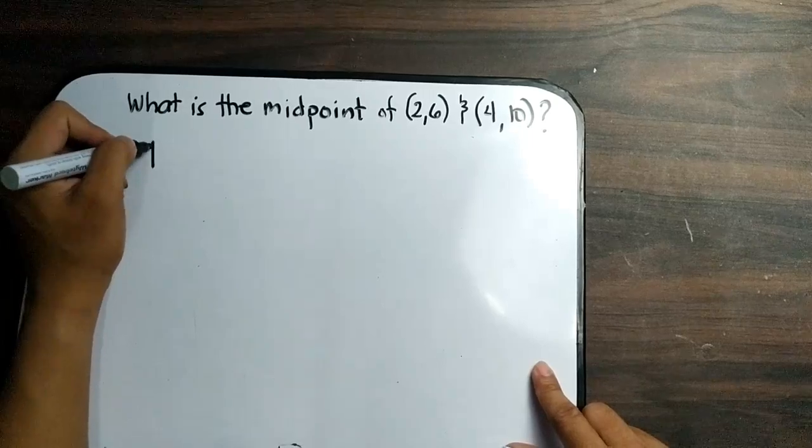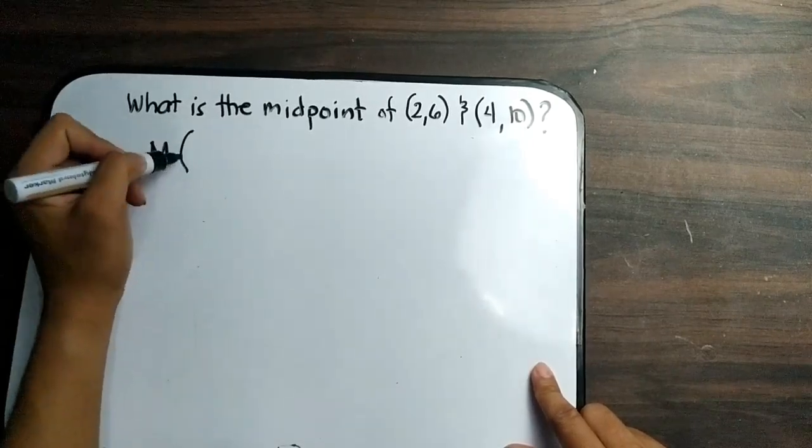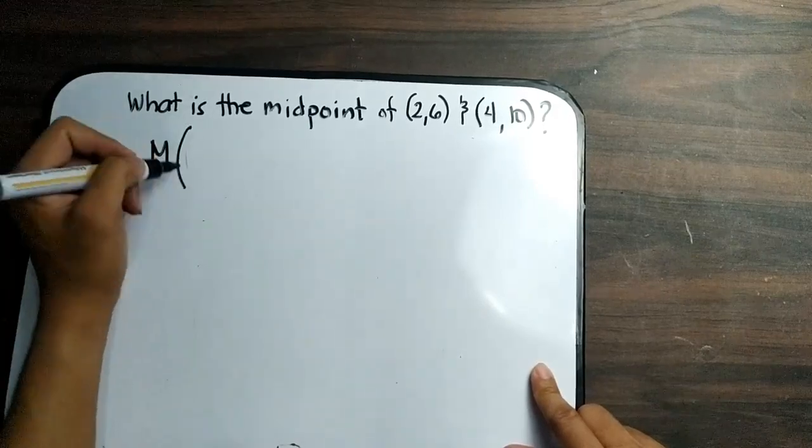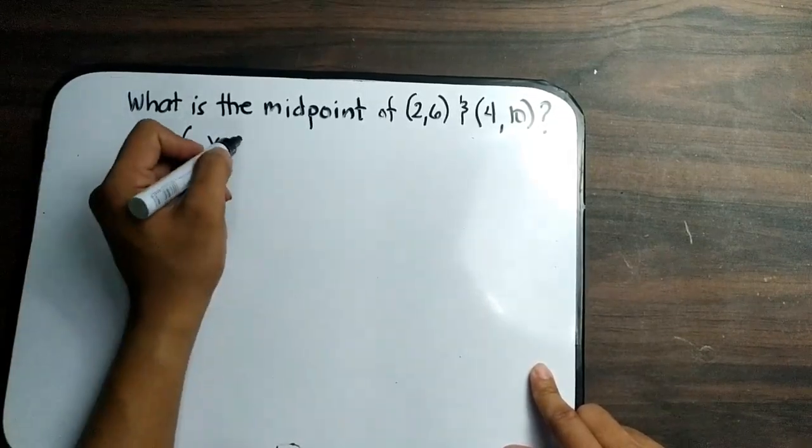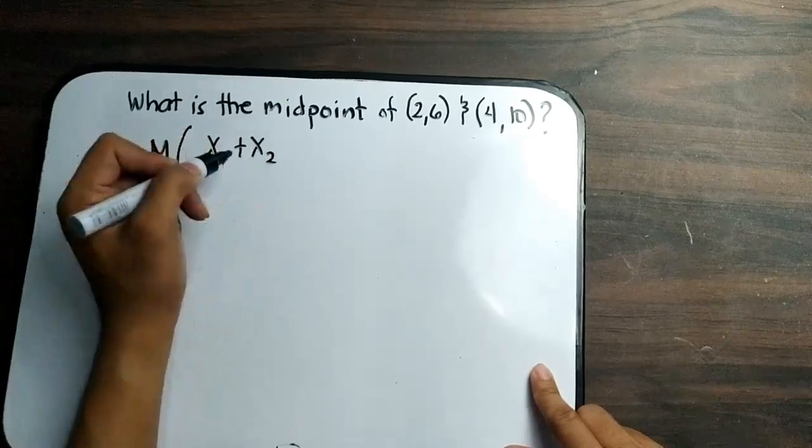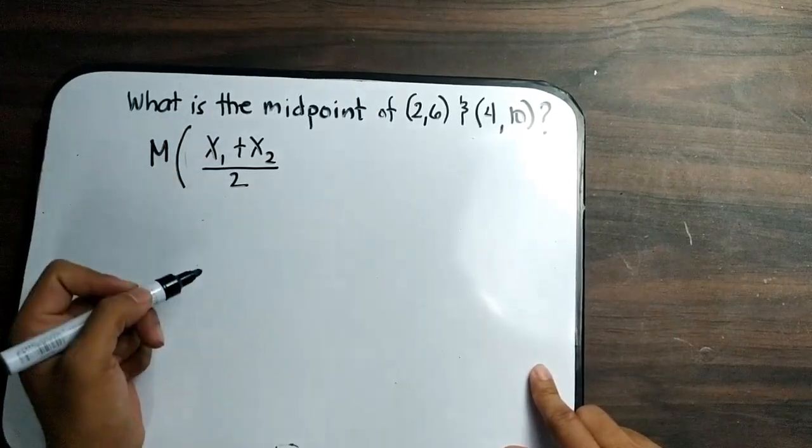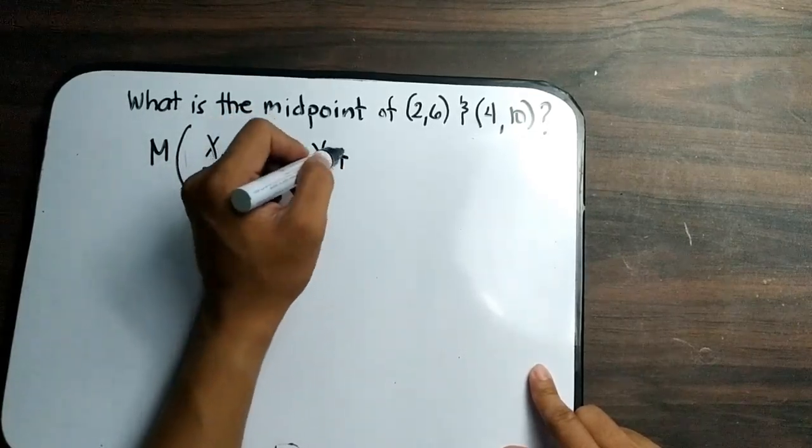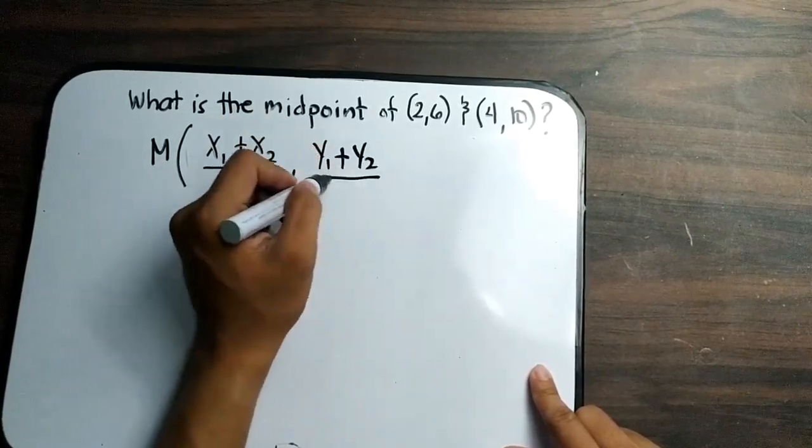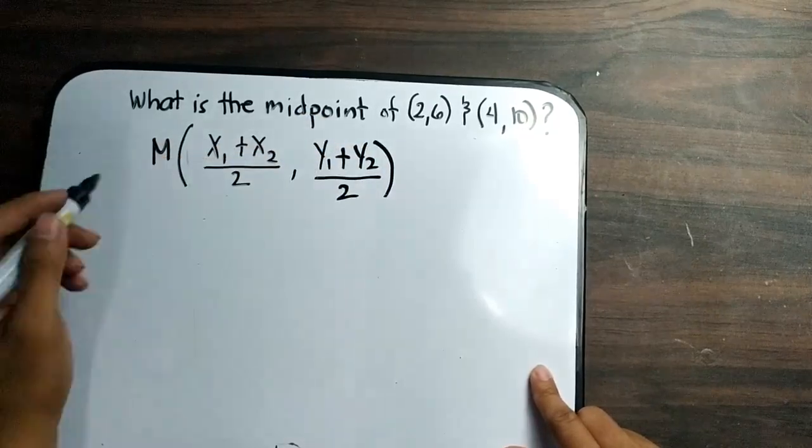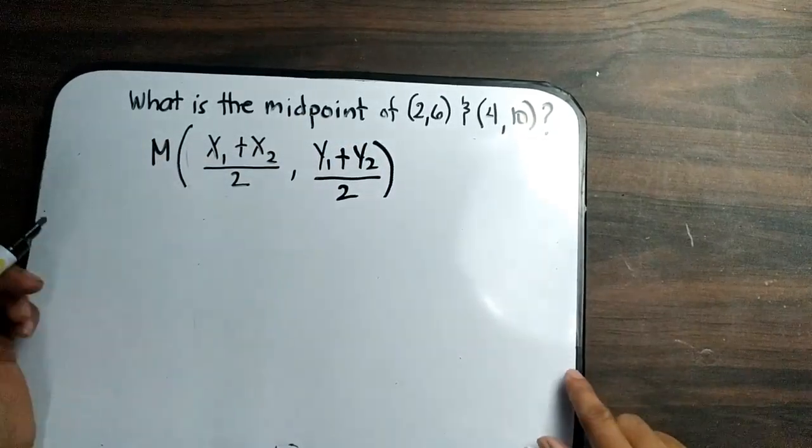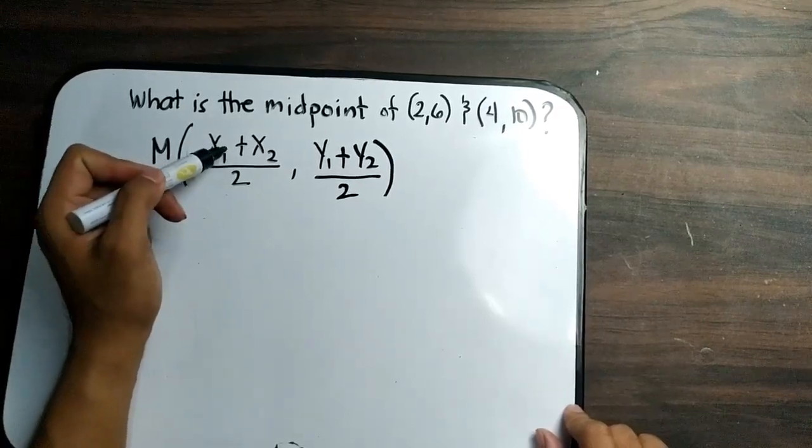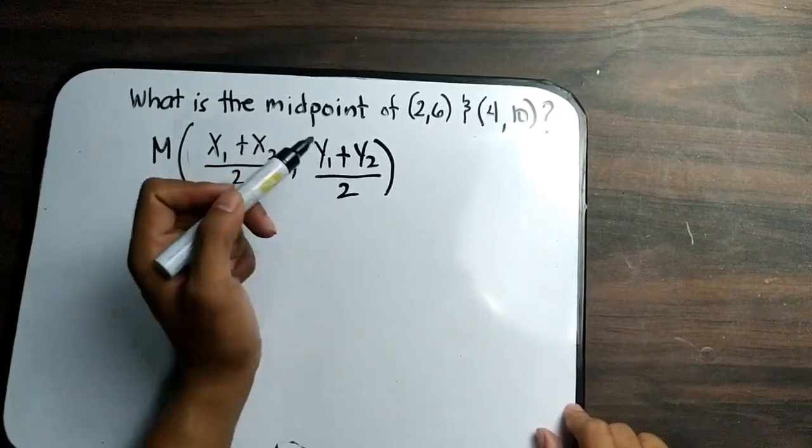The formula for midpoint is simply M: we have x sub 1 plus x sub 2 all over 2, and y sub 1 plus y sub 2 all over 2. As you can see in this formula, it is simply finding the average of the x coordinates and finding the average of the y coordinates.